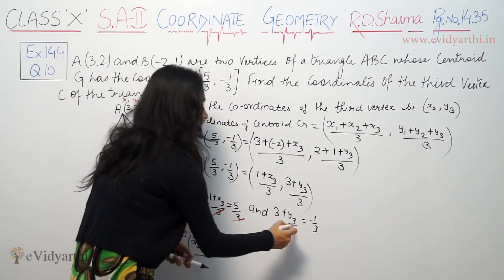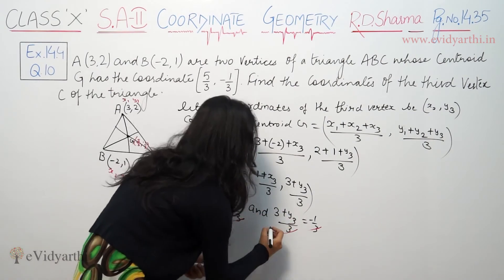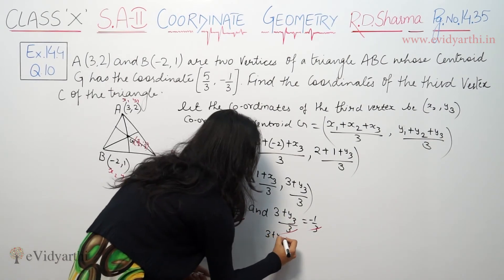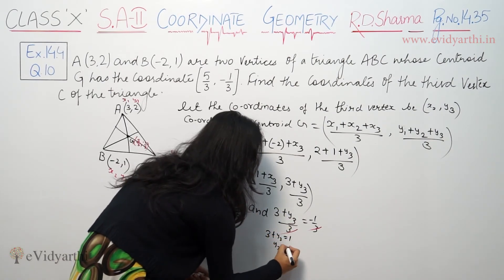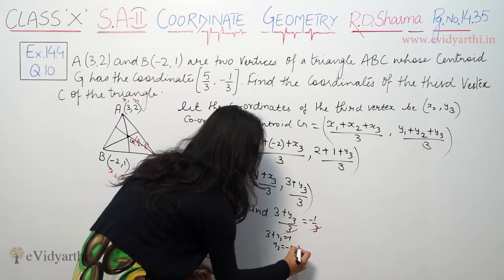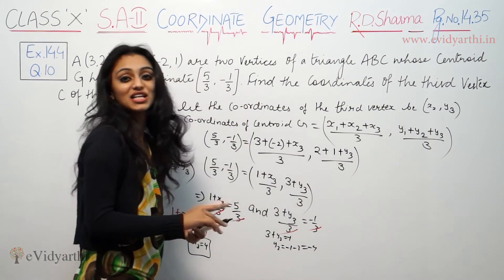Same for y3. 3 cancels. So 3 plus y3 equals minus 1. So y3 is minus 1 minus 3, which is minus 4.